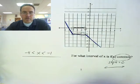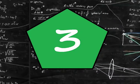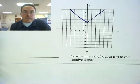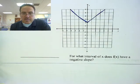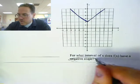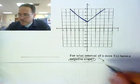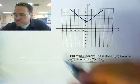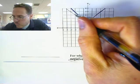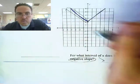Let's take a look at number three. For what interval of x, where on the x-axis am I supposed to look? The condition is: does the function have a negative slope? When it says negative slope, that means it's going down — it's decreasing. And since we always read left to right, that means it's going down right in here.